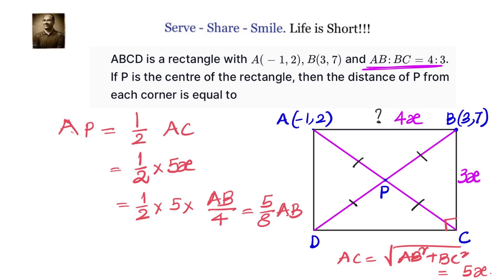Now what is the distance between AB? For that we will be using distance formula: square root of X2 minus X1 whole square plus Y2 minus Y1 whole square. So AB equals to square root of 3 plus 1 whole square plus 7 minus 2 whole square, which is equals to square root of 4 square plus 5 square, which is square root of 16 plus 25, and that is equals to square root of 41.